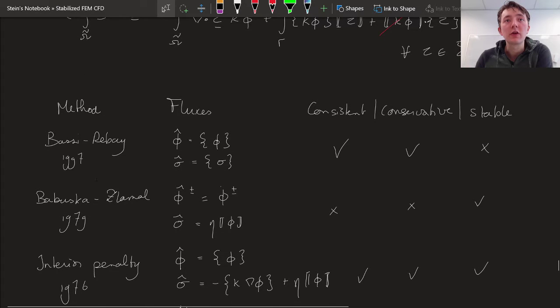I've made the table in such a way that we have the method name on the left, the choice of numerical fluxes as the second column, and then a summary of whether or not these are consistent, conservative, and stable.